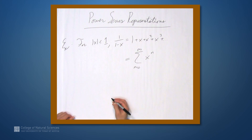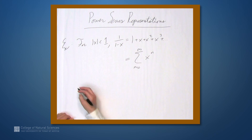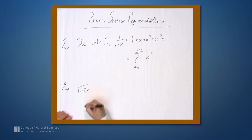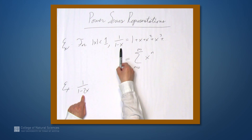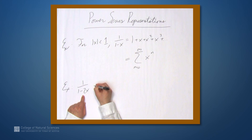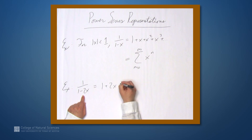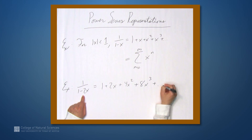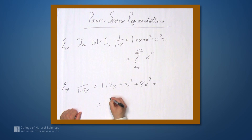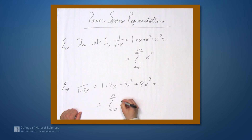We can use this to come up with a number of other representations. For example, let's take 1 over 1 minus 2x. To get the representation for this, we can substitute 2x for x in the series. So 1 over 1 minus 2x is just 1 plus 2x plus 4x squared plus 8x cubed and so on — in other words, the sum from n equals 0 to infinity of 2 to the n times x to the n.